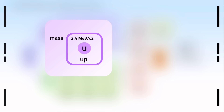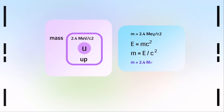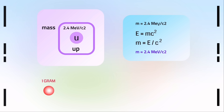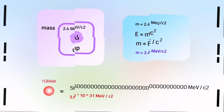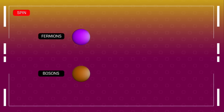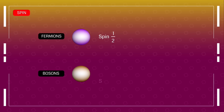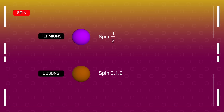If we look at the first particle, it has a mass of 2.4 mega electron volts divided by c squared. The mass of an elementary particle is mentioned as energy. It comes from Einstein's mass-energy equivalence equation: E equals mc squared. For example, if we convert 1 gram of mass into pure energy, it becomes 5.6 × 10 to the power of 31 mega electron volts. In the realm of particle physics, fermions are generally characterized by half-integer spins, while bosons typically possess integer spins such as 0, 1, or 2.